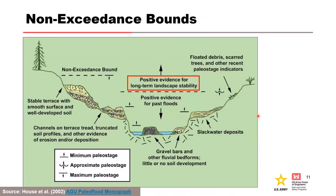We can also look at positive evidence of long-term landscape stability in a geologic record, which demonstrates the opposite — it demonstrates the absence of a large flood. We call these non-exceedance bounds: a minimum stage that has not been inundated over a period of time. In the figure, positive evidence of long-term landscape stability informs our non-exceedance bound, which sits above all the indicators where we would have positive evidence of a flood — we're looking for landscape stability, not flood deposits.